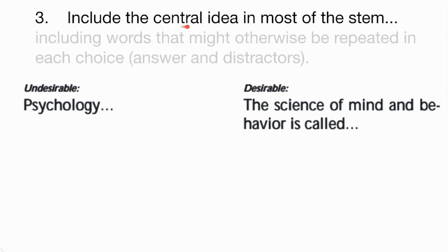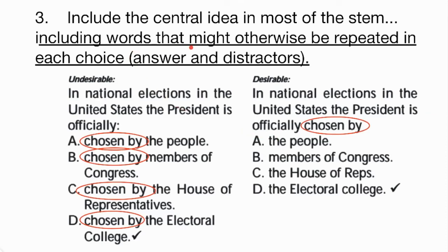A third suggestion is to include the central idea of what is being assessed in most of the stem. Here's an undesirable item where the stem simply says 'Psychology...' Instead, we could include more of the central idea: 'The science of mind and behavior is called.' In addition, we want to make sure we're including words that might otherwise be repeated in each choice. For example, we do not want the stem to repeat a phrase like 'chosen by' across every answer choice — instead, we should take that repetitive phrase and place it in the stem.